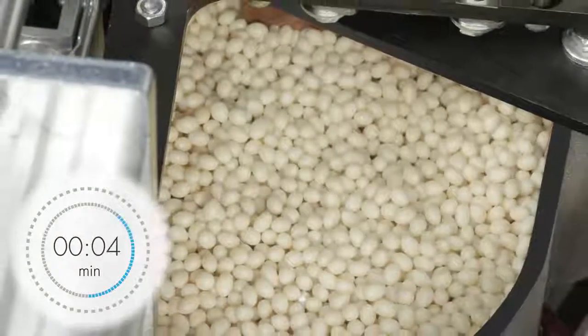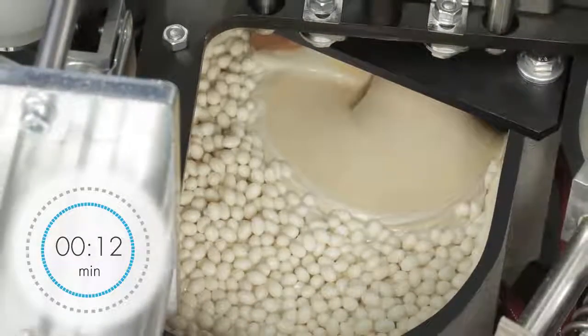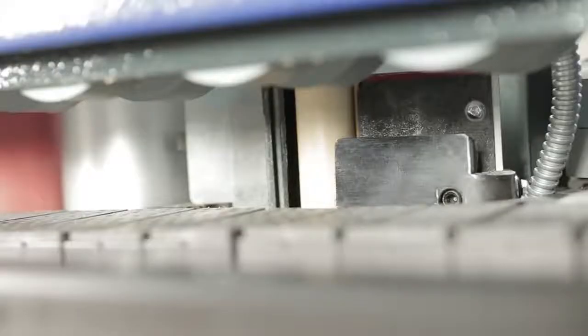The Teflon coated glue pot, suitable for EVA or PUR use, holds 1.2 kilograms, 2.6 pounds of glue, which corresponds to approximately 300 meters, 985 feet, of edge.